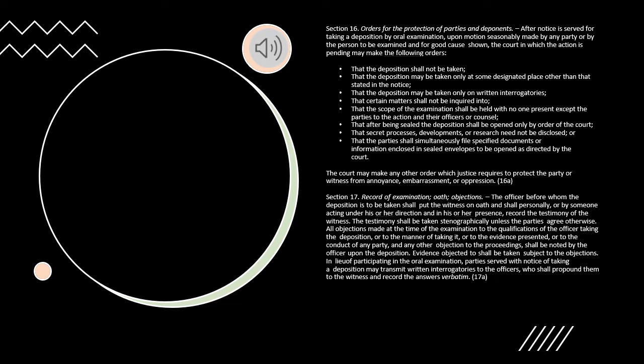Section 17. Record of Examination, Oath, Objections. The officer before whom the deposition is to be taken shall put the witness on oath and shall personally, or by someone acting under his or her direction and in his or her presence, record the testimony of the witness. The testimony shall be taken stenographically unless the parties agree otherwise. All objections made at the time of the examination to the qualifications of the officer taking the deposition, or to the manner of taking it, or to the evidence presented, or to the conduct of any party, and any other objection to the proceedings, shall be noted by the officer upon the deposition. Evidence objected to shall be taken subject to the objections. In lieu of participating in the oral examination, parties served with notice of taking a deposition may transmit written interrogatories to the officers, who shall propound them to the witness and record the answers verbatim.